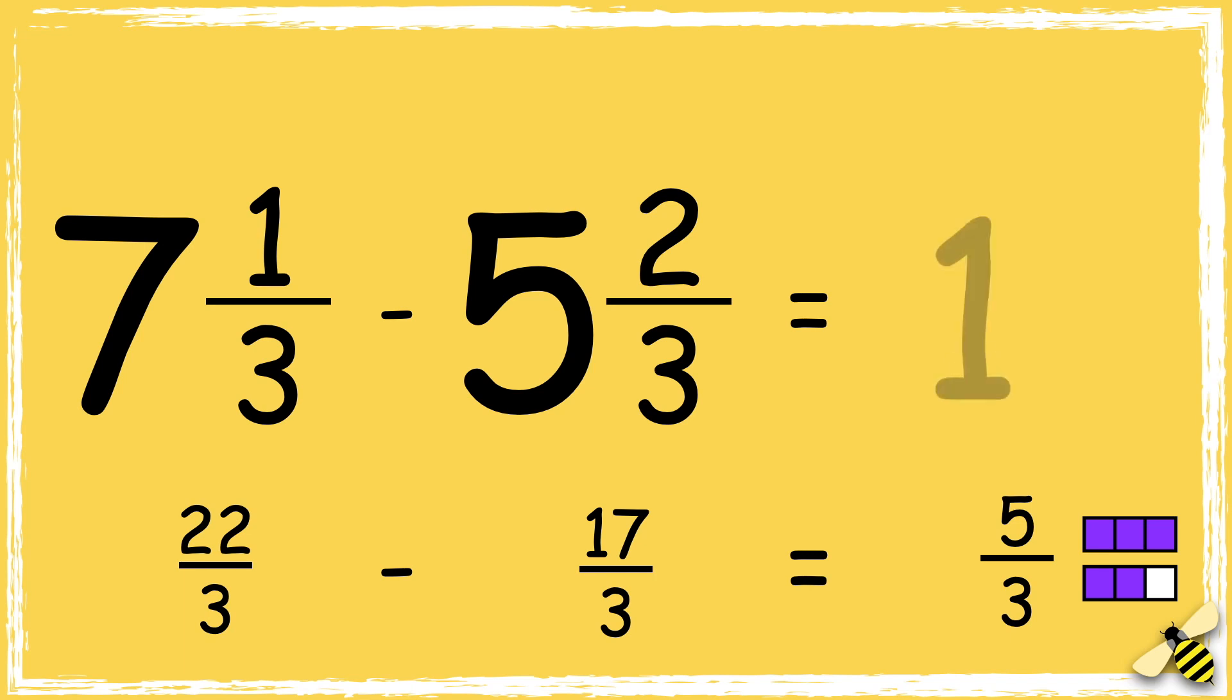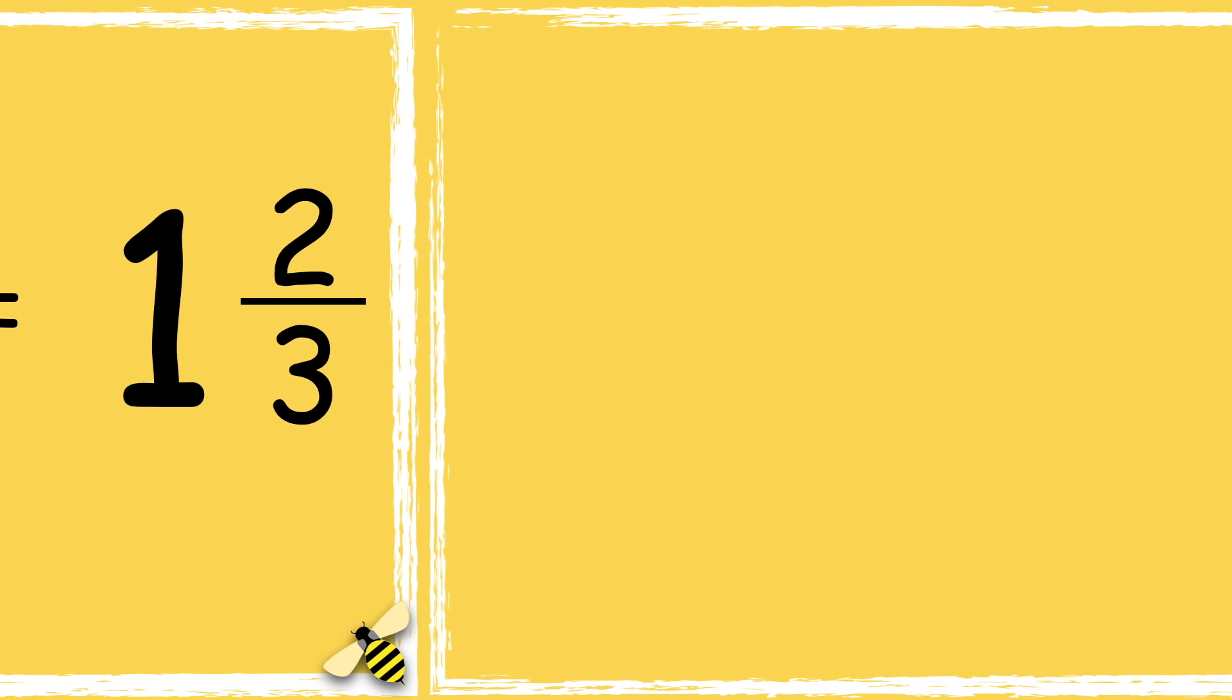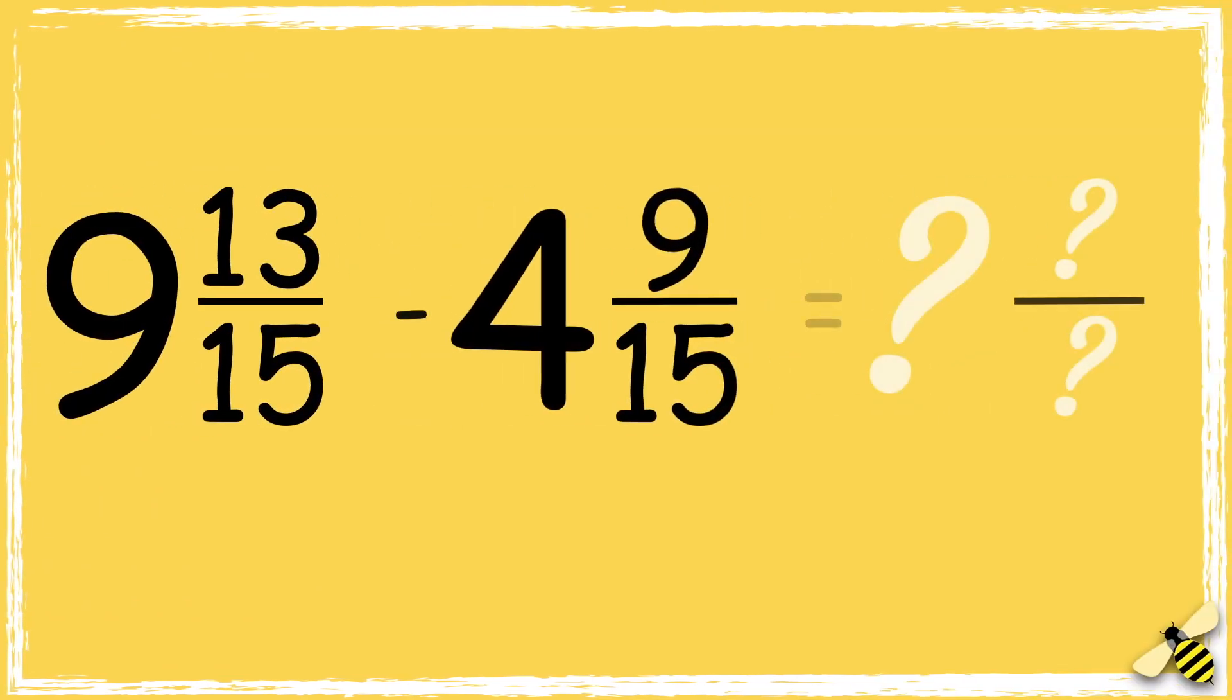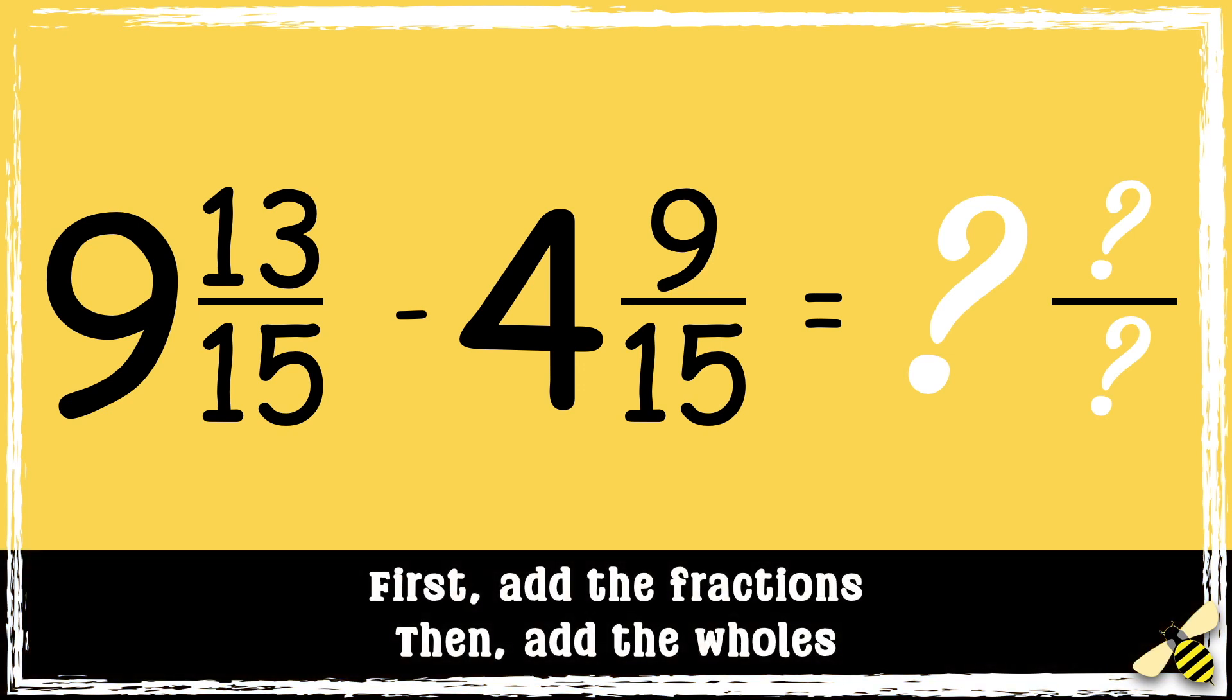So now we can convert five-thirds into a mixed number. We have one whole and two-thirds, so the answer is one and two-thirds. Now it's your turn. Can you subtract these mixed numbers? Remember, add the fractions first and then add the whole numbers. Let me know your answers in the comment section.